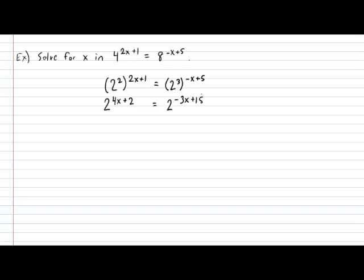This relies on the regular laws of exponents and regular algebra. Now that we've cleaned it up and the bases are the same, we can ignore the bases and simply make sure the exponents work out to be identical. The left exponent equals the right exponent. Manipulating the expression, we get 7x equals 13, and therefore x equals 13 over 7.